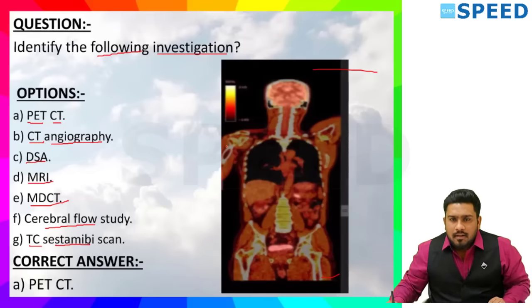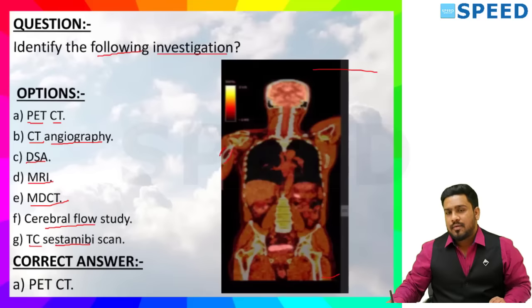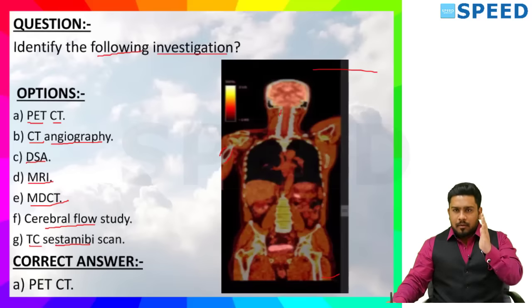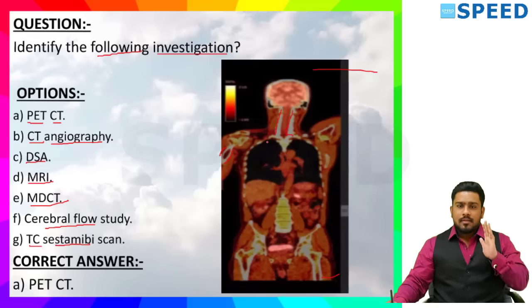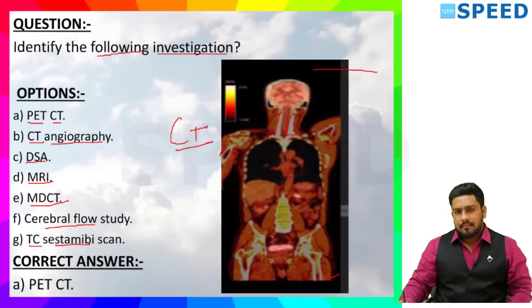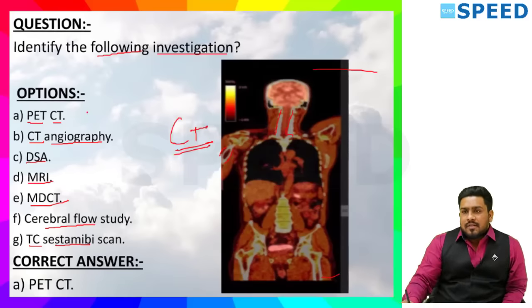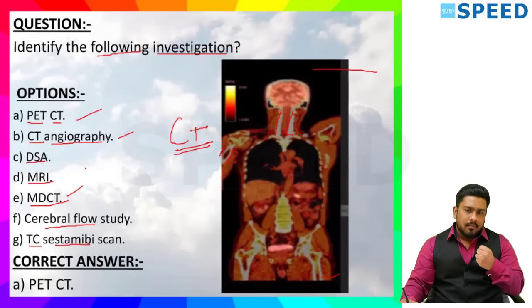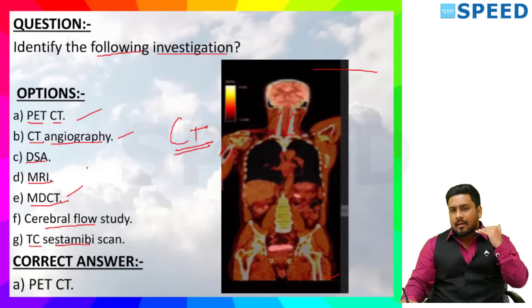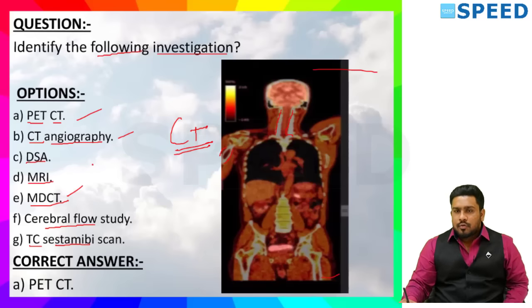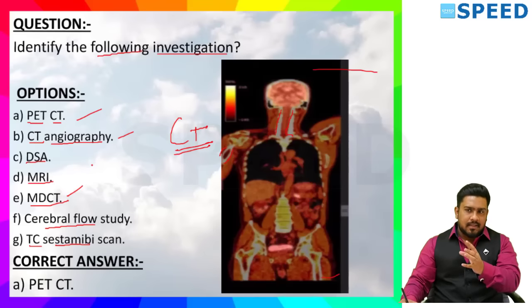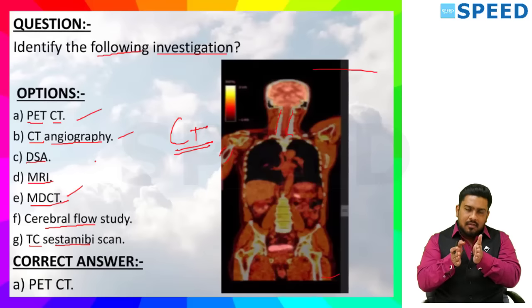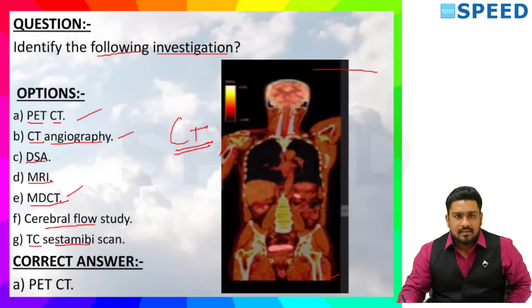First, look at the bone part — the humerus. The bone outer edge appears white — so this is a CT image. There are three CT-related options: PET CT, CT angiography, and multi-detector CT. Look at this image — there is a gradient of color from black up to red and yellow. So this is a fusion image of PET scan with CT scan. CT is for anatomical and PET is for functional. The fusion of anatomy and function is the PET CT scan — this is a classical example of PET CT.